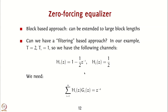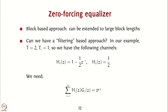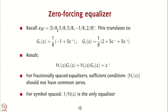We need an equalizer satisfying Σ Hᵢ(z)·Gᵢ(z) = z^(-d), effectively giving a perfect delay. From our matrix operations, the zero forcing equalizer gives coefficients 5/8, 5/8, 5/8, -1/8, 2/8. Reversing the coefficients carefully, G1(z) = -1/8 + 5/8·z⁻¹ and G2(z) = 2/8 + 5/8·z⁻¹ + 5/8·z⁻². You can confirm that H1(z)·G1(z) + H2(z)·G2(z) = z⁻¹. We are going to implement G1 and G2 in GNU Radio.